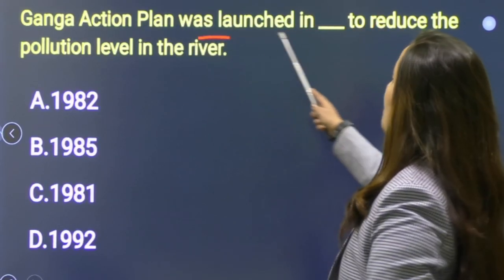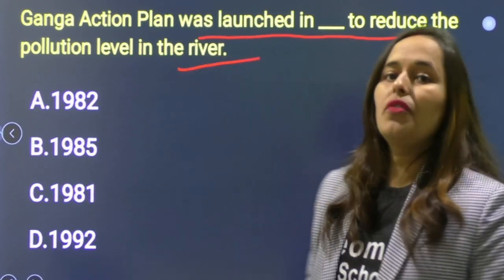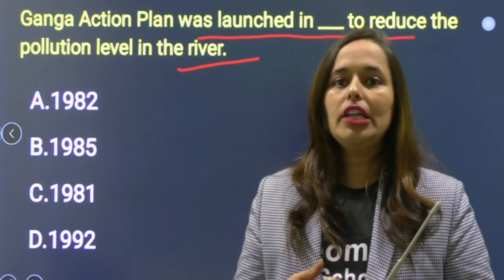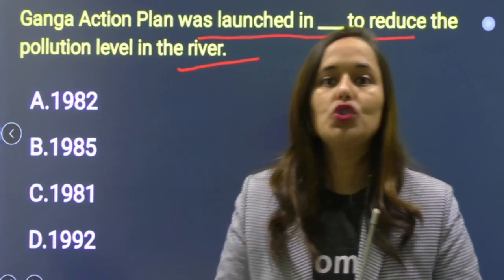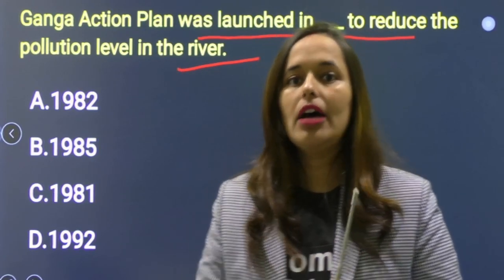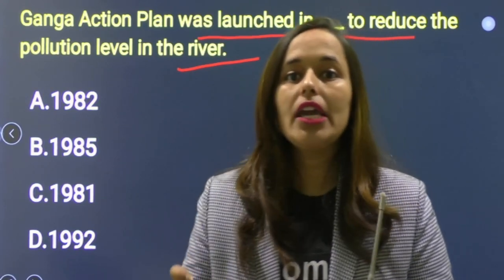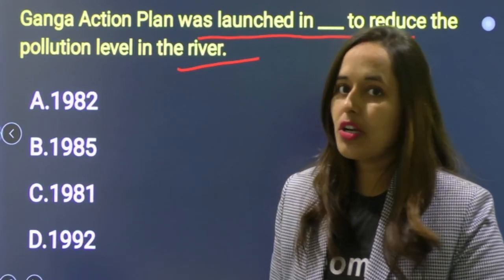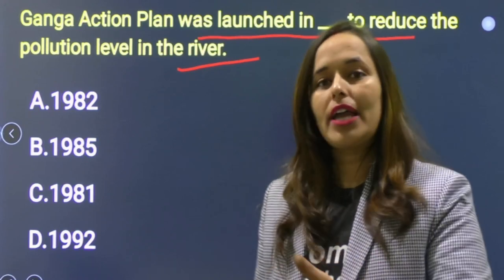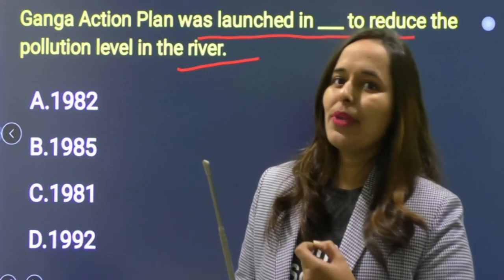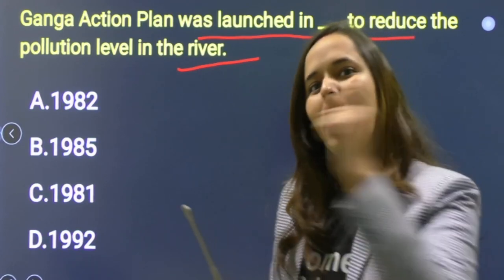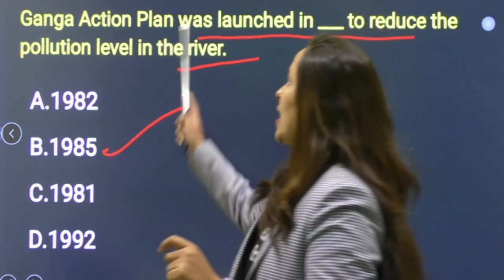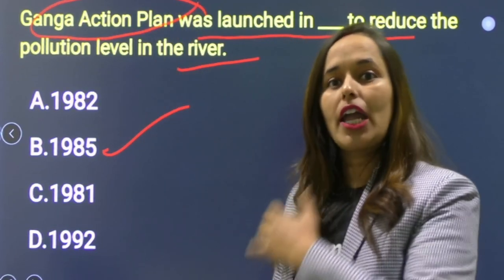Next question: Ganga Action Plan was launched to reduce the pollution level in the river. जब Ganga बहुत ज़्यादा polluted हो गई थी, तब Ganga Action Plan launch किया गया था। वो किस year में launch हुआ था? Options: 1982, 1985, 1981, 1992. Correct option is B — 1985 में Ganga Action Plan launch किया था।